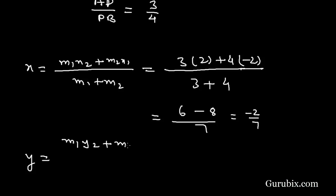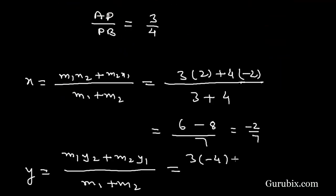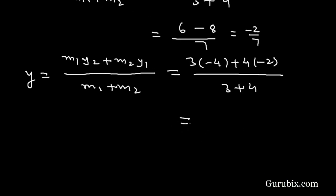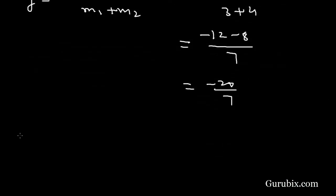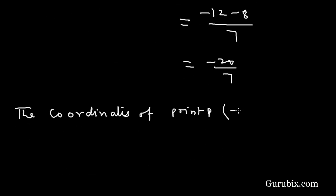With y2 = -4, m2 = 4, and y1 = -2, calculating further: the y-coordinate gives (-12 − 8) over 7, which is -20/7. Therefore the coordinates of point P are (-2/7, -20/7). This is the solution of the question. Thank you.